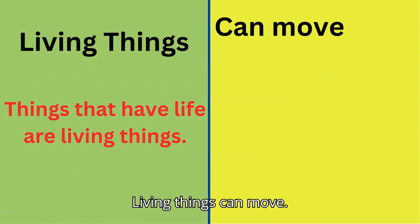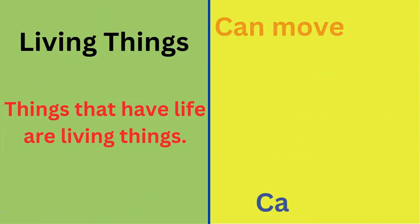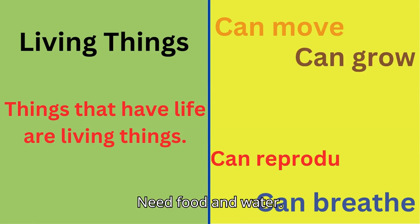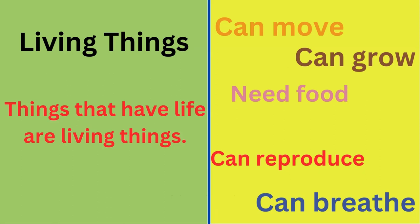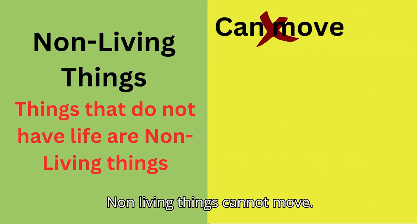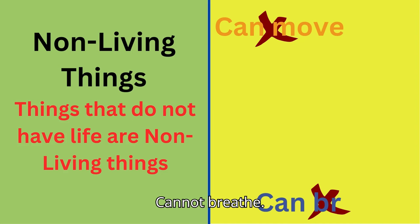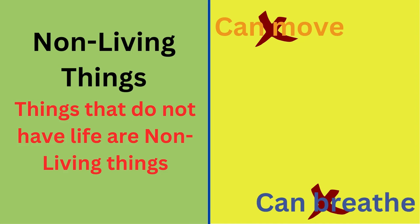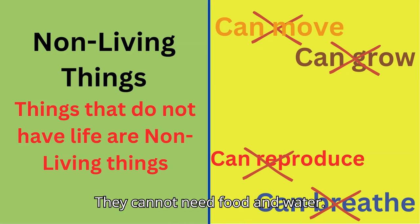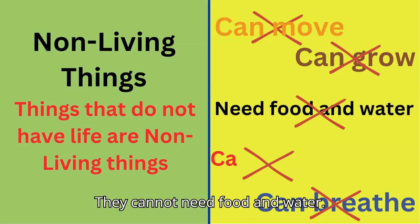Living things can move, can breathe, can grow, can reproduce, and need food and water. Non-living things cannot move, cannot breathe, cannot grow, cannot reproduce, and do not need food and water.